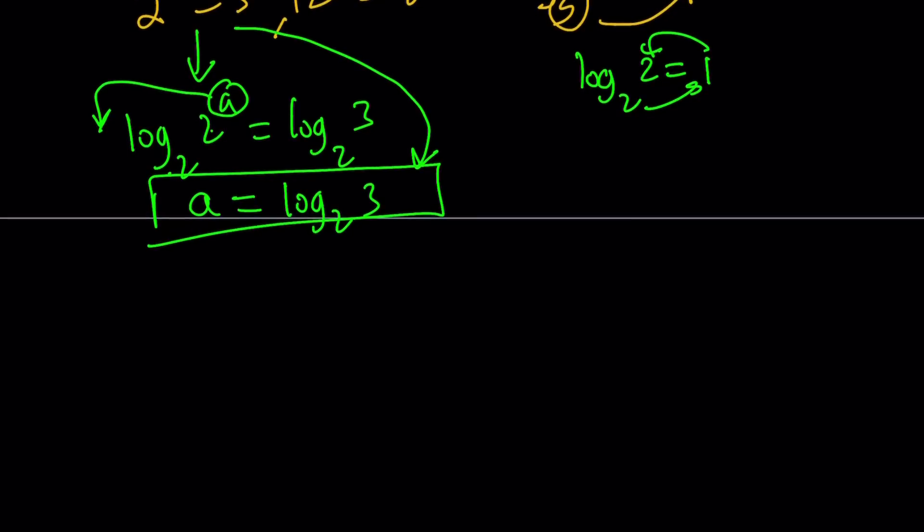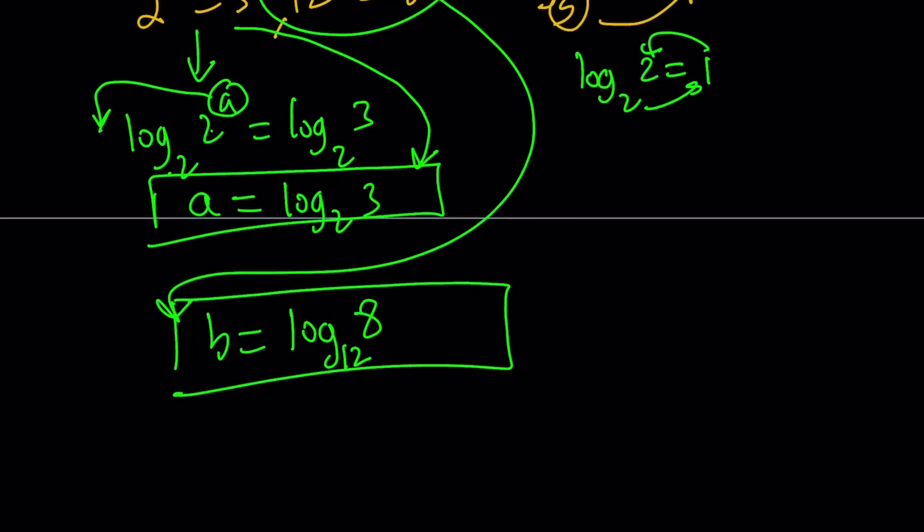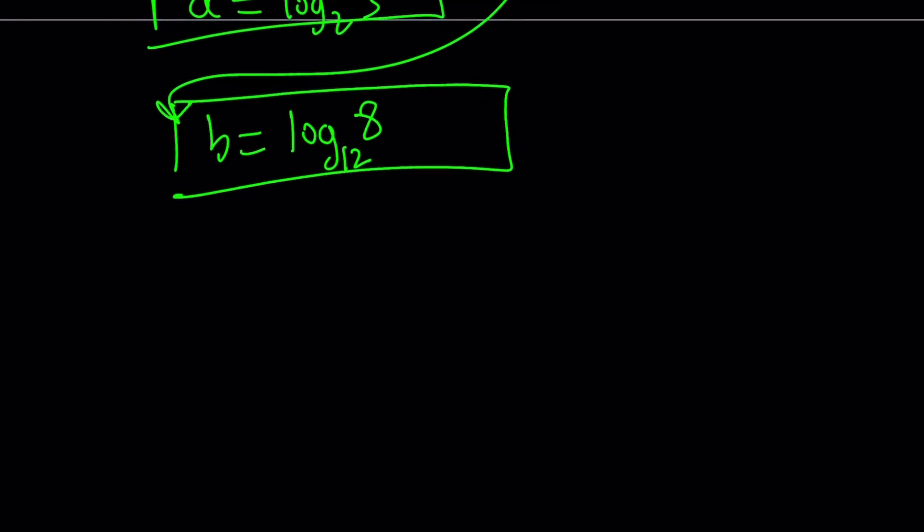So we got the a and let's go ahead and use that shortcut for the second one. Similarly, we can write this as b equals log 8 with base 12. So base doesn't change. So we get these two things. How are we going to use them? What are we trying to evaluate? Always check what the question is.